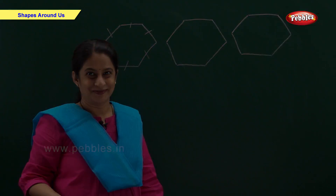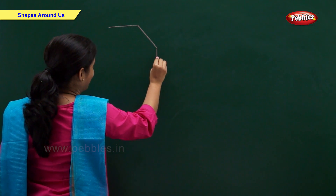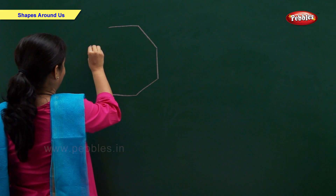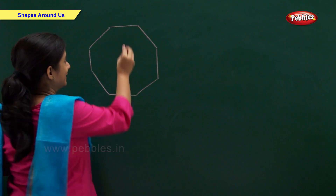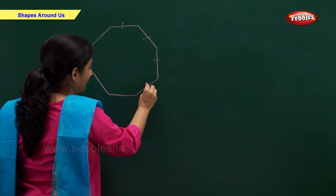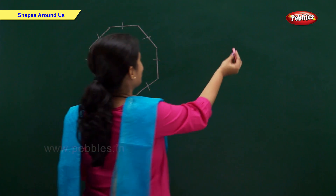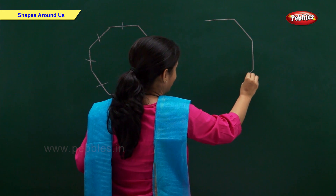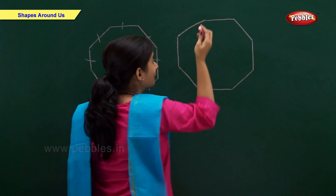Now let us draw an octagon. An octagon has eight sides — one, two, three, four, five, six, seven, eight. Octagon.